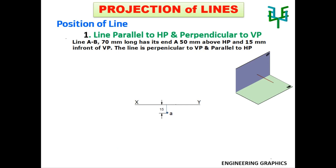The line is perpendicular to VP, so draw a line from A perpendicular to the XY line. The length of this line is the true length, that is 70mm. The other end point of the line is B. Since the line is perpendicular to VP, it can be seen as a point in the elevation, 50mm above the XY line, because end point A is 50mm above the HP. This point is A-dash and B-dash.